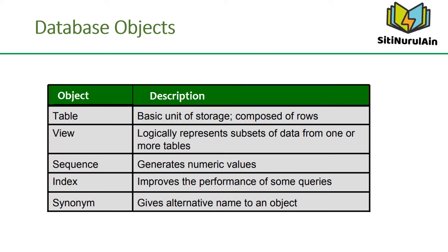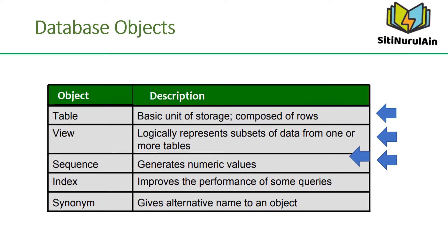The Oracle database can contain multiple data structures. Each structure should be outlined in the database design so that it can be created during the build stage of database development. A table is the basic unit of storage and is composed of rows. A view is a subset of data from one or more tables. A sequence generates numeric values. An index improves the performance of some queries. A synonym gives an alternative name to an object.